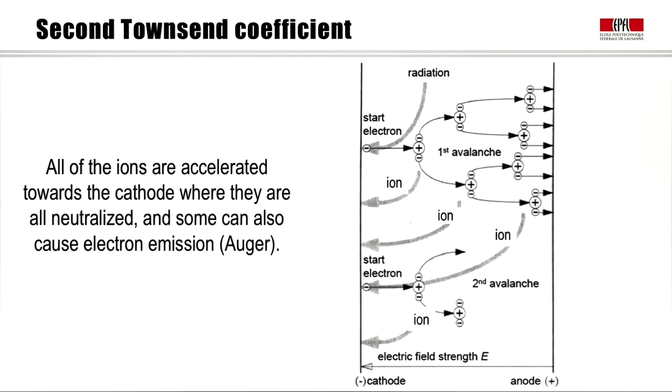Now, if we look again at the cathode and the anode, we consider what happens when the ions themselves arrive back at the cathode. So, we have a start electron, this causes an ionizing event, the ion goes back to the cathode, and the avalanche continues towards the anode. All the subsequent ions arrive back at the cathode. All the ions are neutralized there, but some of them, when they strike the cathode, can cause secondary electron emission, for example, by the Auger effect, and these secondary electrons can create further avalanches.